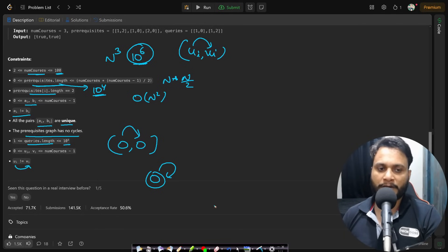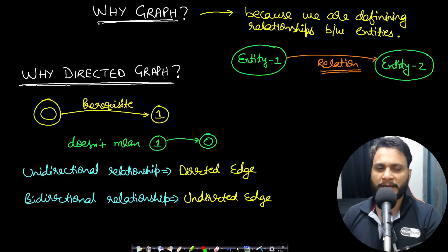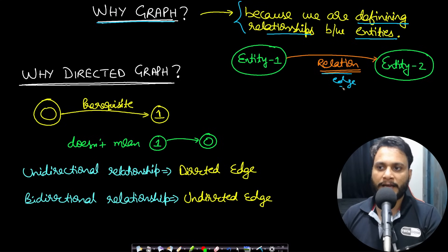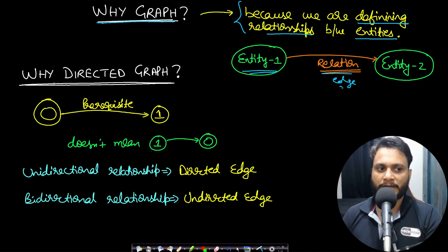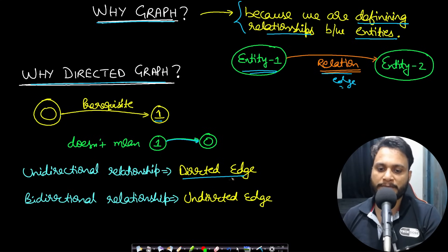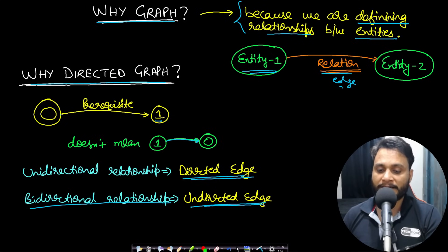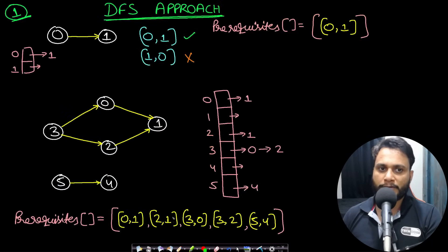Before the solution, consider why this is a graph problem: we are defining relationships between entities. Relationships are represented as edges and entities as vertices. The relationship here is unidirectional — if 0 is a prerequisite of 1, that does not mean 1 is a prerequisite of 0. When bidirectional assumption is not allowed we use directed edges, giving us a directed graph. Bidirectional relationships would yield undirected graphs.